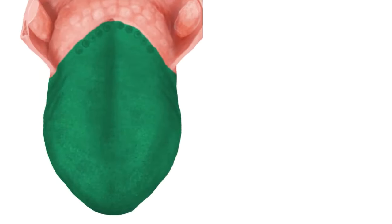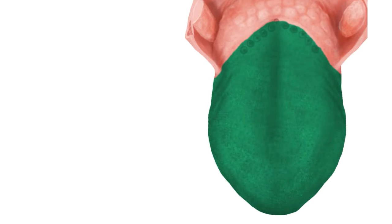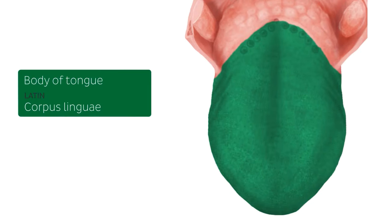Let's start with the first highlight, the body of the tongue. The body of the tongue is bordered anteriorly by the tip, also known as the apex, and posteriorly by the root of the tongue.